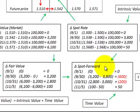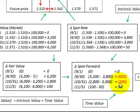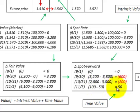To determine the change in the spot forward rate — the time value portion of the contract — we subtract the change in spot rate from the change in fair value. For 9-30, the fair value change was $3,200 and the spot rate change was $3,800, giving negative $600. For 10-31, the fair value change was $2,800 and the spot rate change was $3,000, giving negative $200. For the last period, a fair value change of $100 minus a spot rate change of $50 gives a $50 change in spot forward rate.